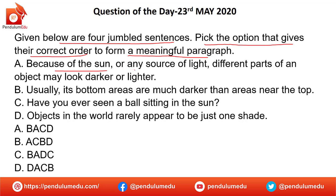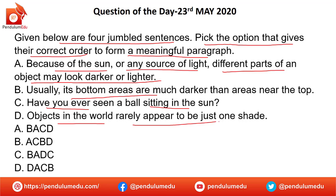A. Because of the sun or any source of light, different parts of an object may look darker or lighter. B. Usually its bottom areas are much darker than areas near the top. C. Have you ever seen a ball sitting in the sun? D. Objects in the world rarely appear to be just one set.